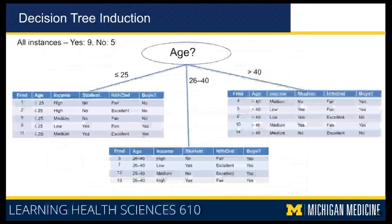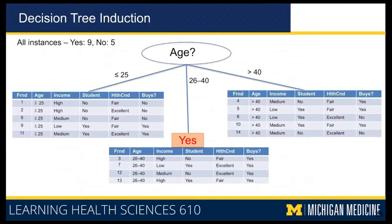You do this to see whether there are additional patterns to split the data further. For the middle group of 26 to 40, the label is all yes — no matter what the other variables are, if age is between 26 and 40 all instances buy insurance. For less than 25 there are three nos and two yeses, and for greater than 40 there are three yeses and two nos.